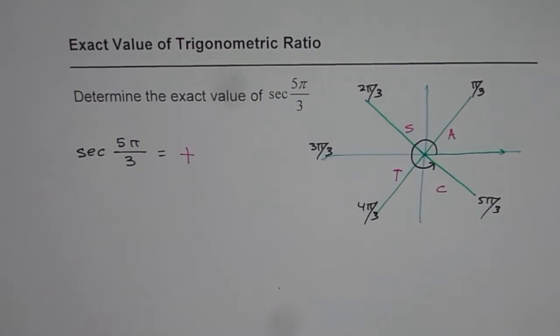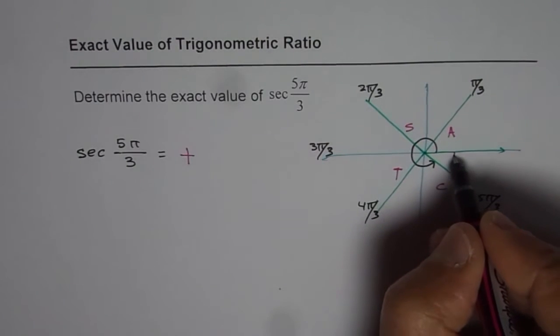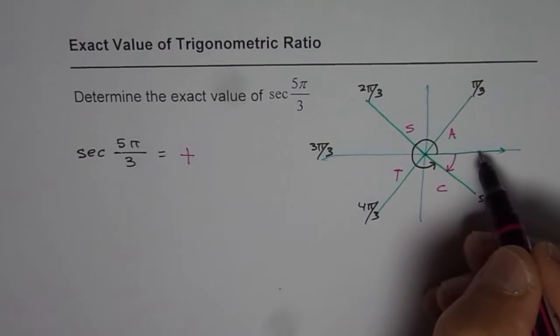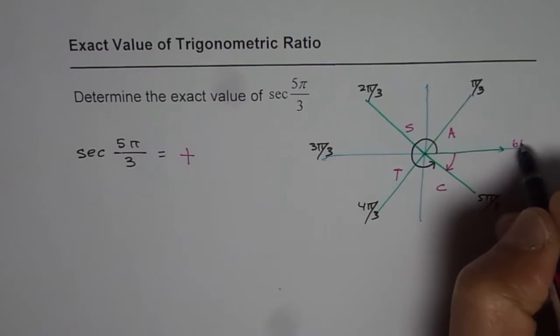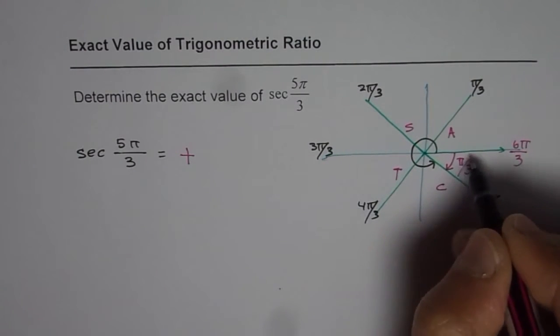That is first part. The second part is to find the related acute angle. Now the acute angle is the angle which is made with the horizontal. Since we are at 5 pi by 3 and this is 6 pi by 3, which is 2 pi, the acute angle is pi by 3 for us.